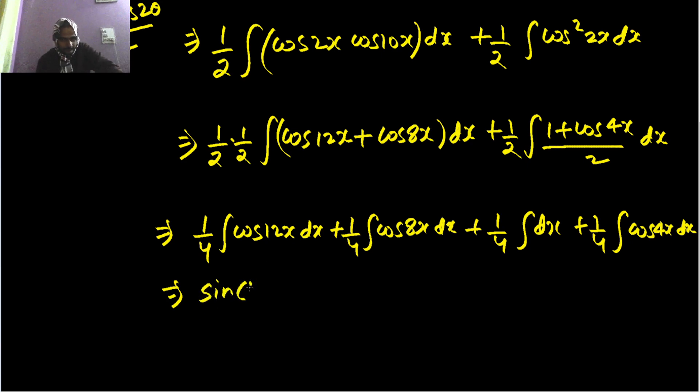Sin 12x divided by coefficient of x which is 12 in this case, and 1 by 4 was already there, so 48. Similarly here also sin 8x divided by 32—8 from here and 4 was already there.